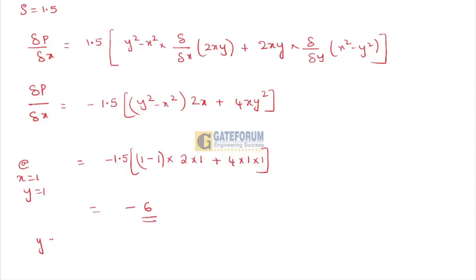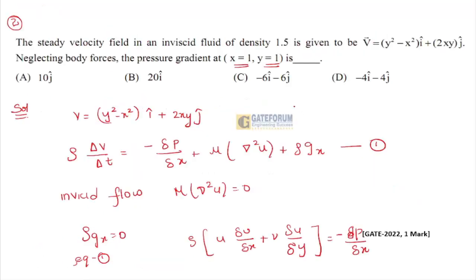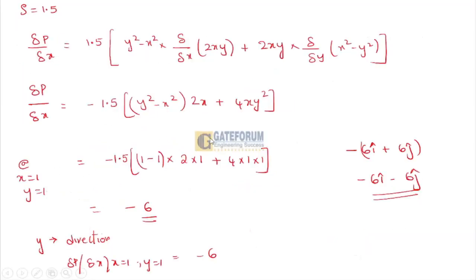Similarly for the y-direction, ∂p/∂y at x = 1, y = 1 also gives -6. So the pressure gradient is -6î - 6ĵ, which means option C is the right answer for the given question.